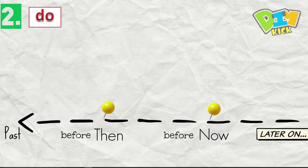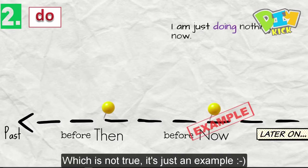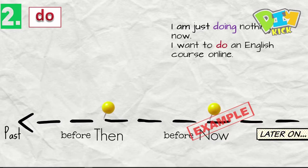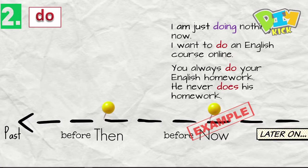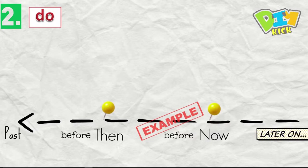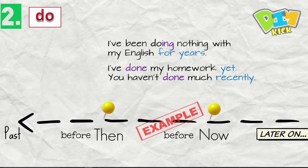All right. And again, let's have examples. I'm just doing nothing now. Which is not true, but it's just an example. I want to do an English course online. You always do your English homework. He never does his homework. So this is the present, now. Now we have examples. I've done my homework yet. You haven't done much recently.